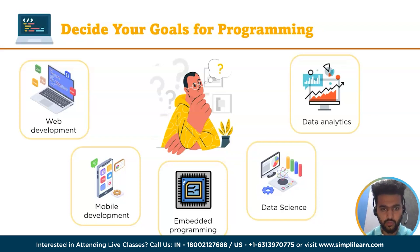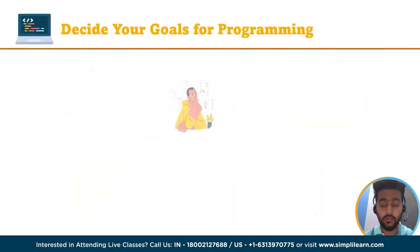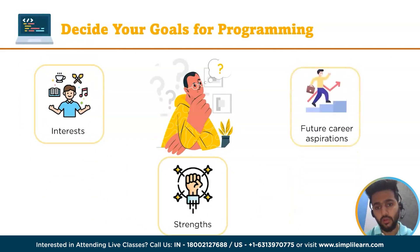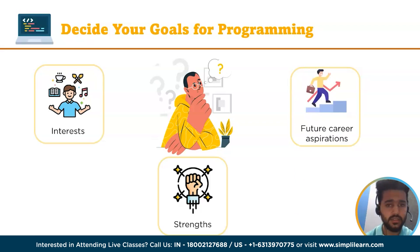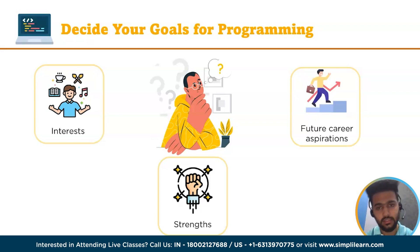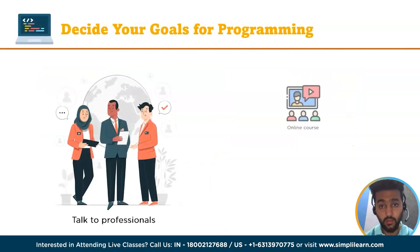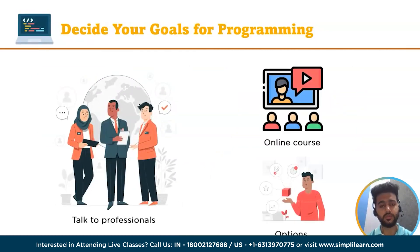When deciding on a goal for programming it is important to consider your interests, strengths and future aspirations. Start by asking yourself what type of programming projects you enjoy, what languages and frameworks you are most comfortable using, and what industries or fields you might want to work in. Once you have a general idea of your interests and career goals, consider talking to professionals in the field and start taking online courses to gain more insight into the various options available.